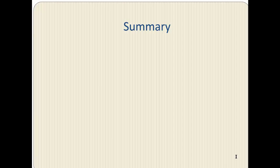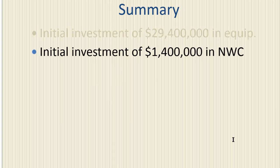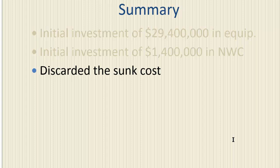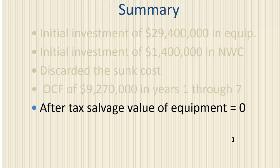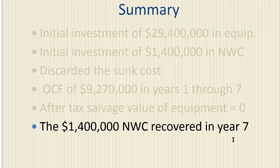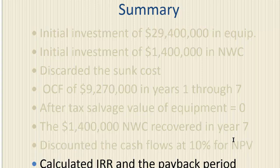Let's summarize the problem. We had an initial investment of $29,400,000 in equipment and $1,400,000 in net working capital. We discarded sunk costs and calculated the OCF using a pro forma income statement, arriving at $9,270,000 for years one through seven. The after-tax salvage value of equipment was zero, and net working capital was recovered in year seven. We discounted cash flows at 10% to find the NPV of $15,048,664, calculated the IRR of 23.46%, and determined the payback period of 3.32 years. Thank you for watching.